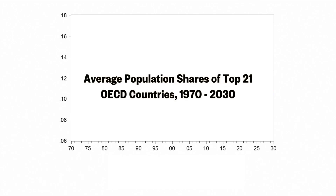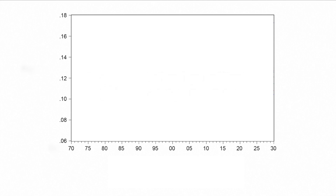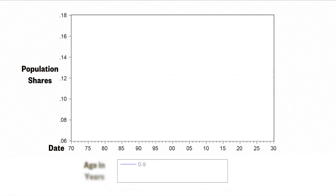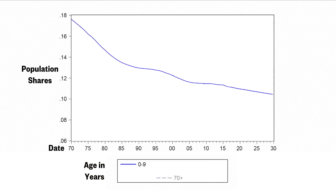We first show empirically that an aging population structure leads to a decline in the long-term growth of the economy, investment, hours worked, real interest rates, and innovation rate. Using United Nations population data and predictions, our conditional predictions show that unless drastic changes occur in the demographic structure, these long-term downward trends will continue.